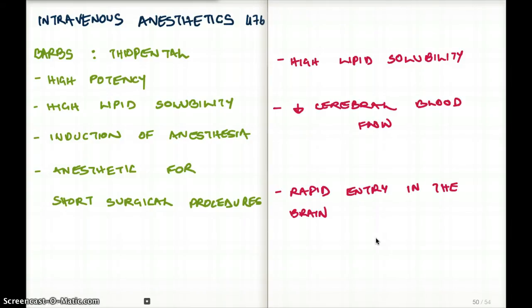So that's also important. So to summarize everything, phenobarbital or barbiturates are going to be high potency. It's going to have high lipid solubility. It's used for induction of anesthesia. It's used as an anesthetic for short surgical procedures. It's going to decrease cerebral blood flow. And there is going to be a rapid entry in the brain.